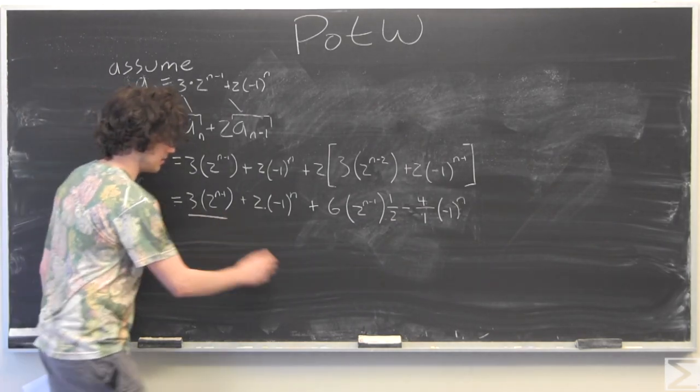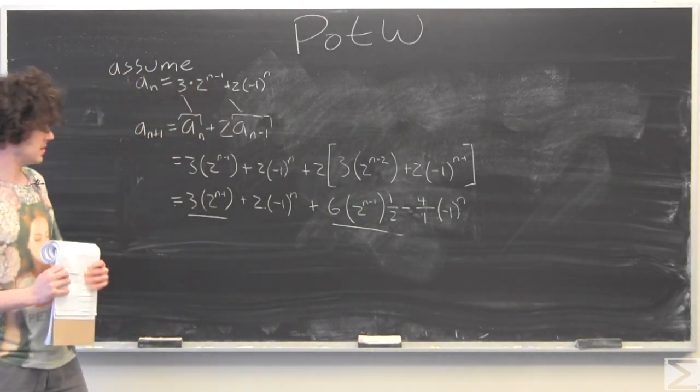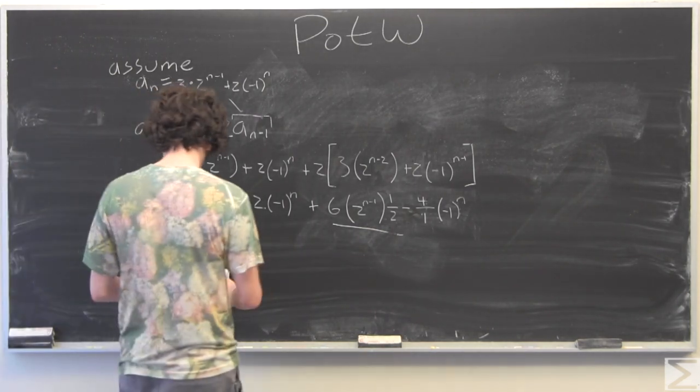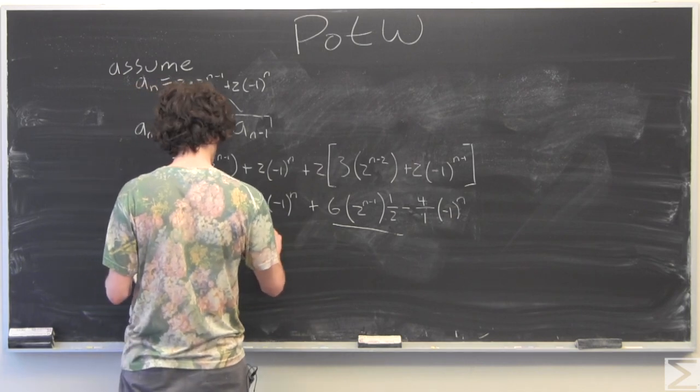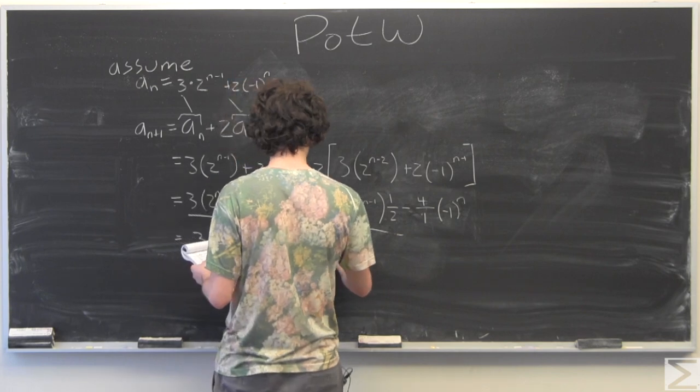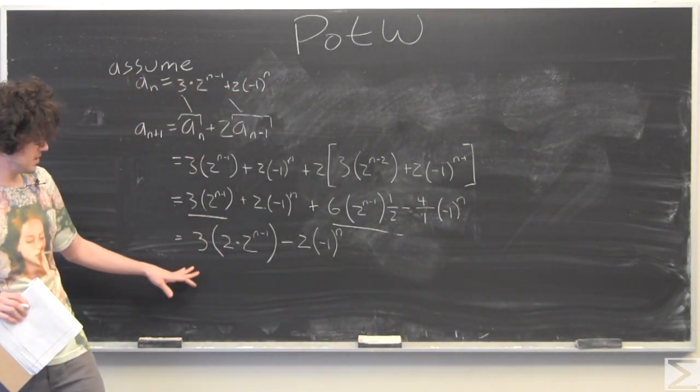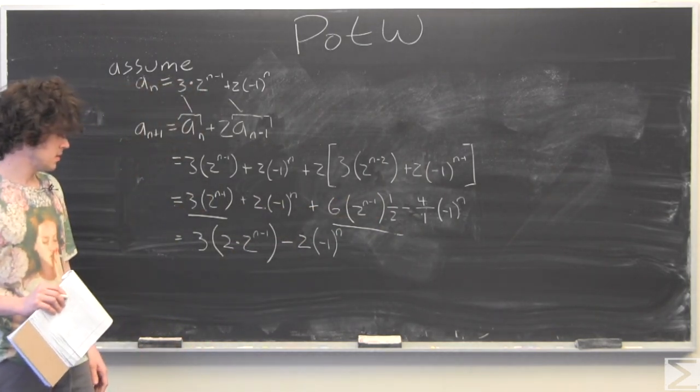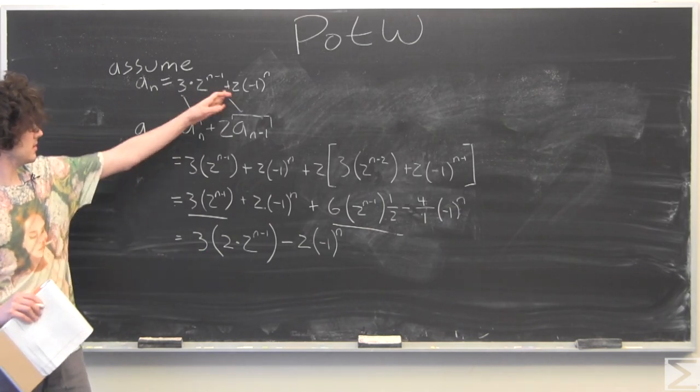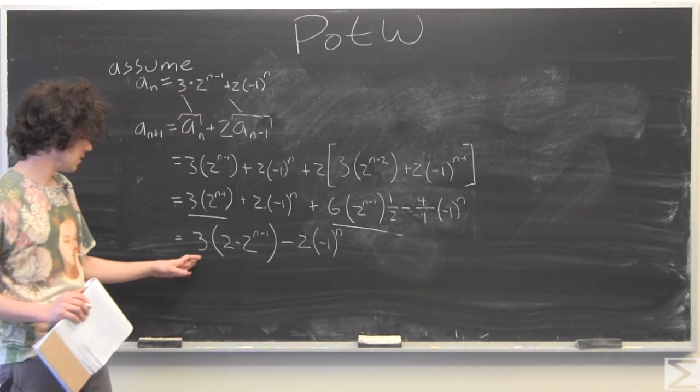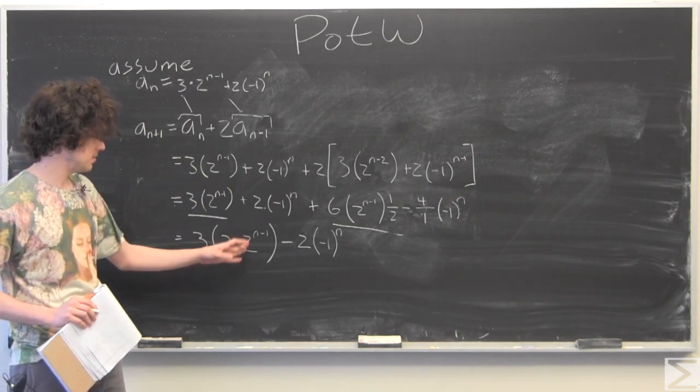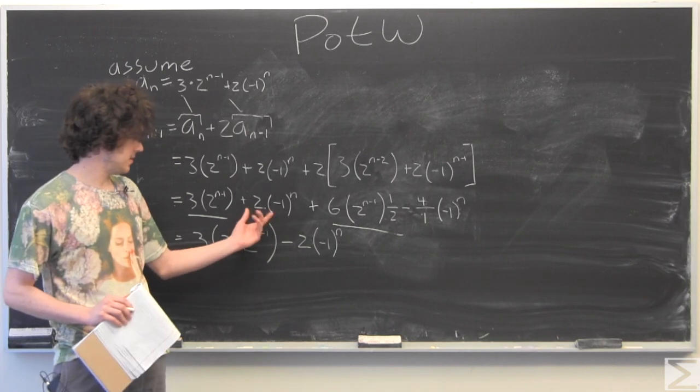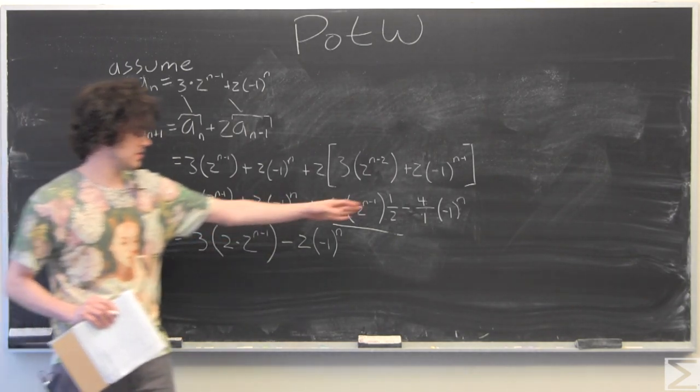So now we notice that we have similar terms because we don't have this multiplication factor, the exponents are the same. So we're just going to condense this expression. So what I've done here, I have 3 times 2 to the n minus 1 plus another 3 times 2 to the n minus 1. So I've taken this out because we're trying to make it look like this in the end. So I've taken out a 3 and we have 2 times 2 to the n minus 1 because we have 2 of these terms both here and here. And I've done the same thing for the negative 1 to the n term. So 2 minus 4 is negative 2.